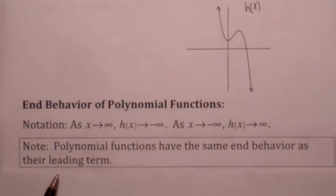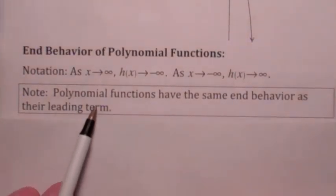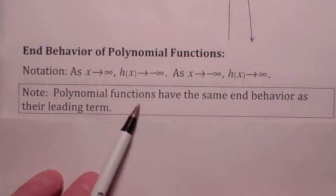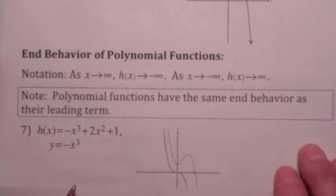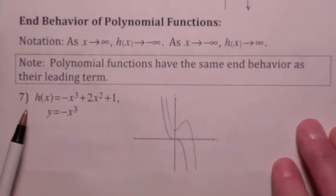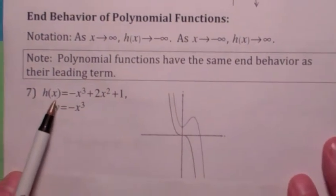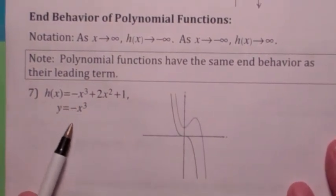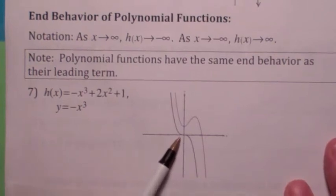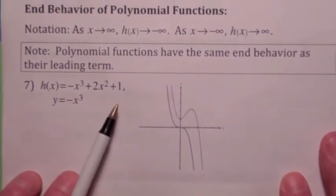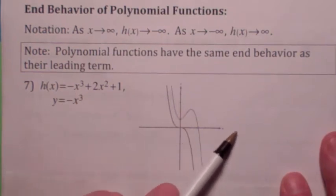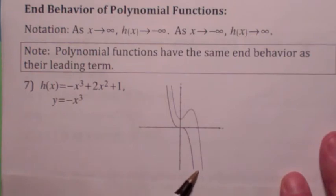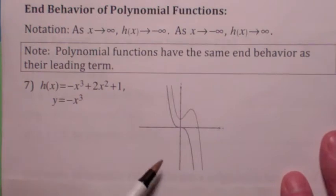End behavior becomes really important. And one thing that's very important about polynomial functions, we'll see this more in class, but they have the same end behavior as their leading term. In other words, whichever term has the highest power, in the end behavior, the polynomial function behaves the same way. So we know that negative x cubed, this is the graph of negative x cubed right here. We know that negative x cubed looks kind of like this. So h of x, even though it might have some humps in the middle here, as x goes to infinity, the graph looks more or less the same as negative x cubed, and as x goes to negative infinity, it does also.